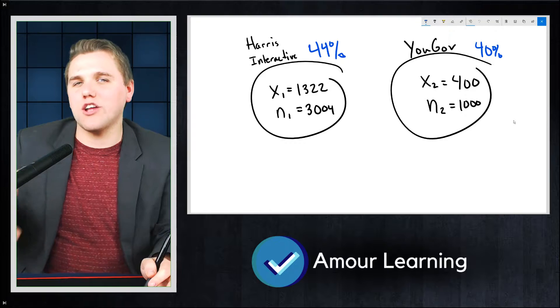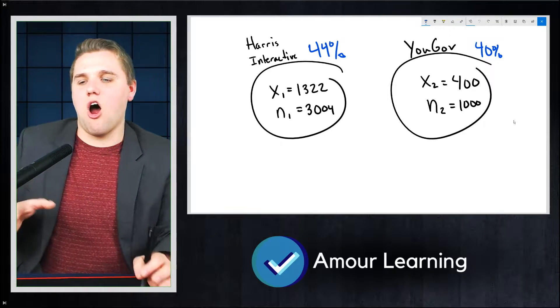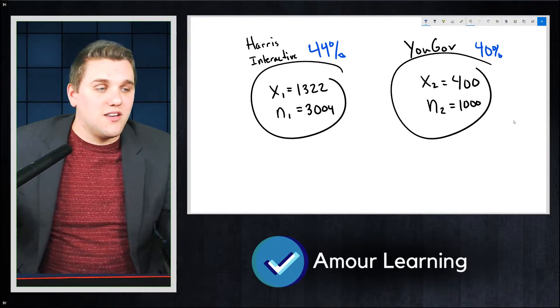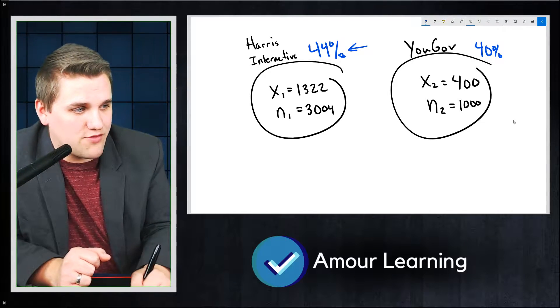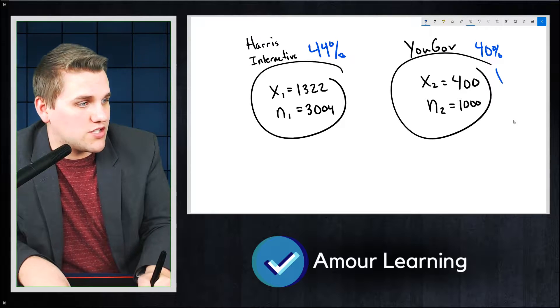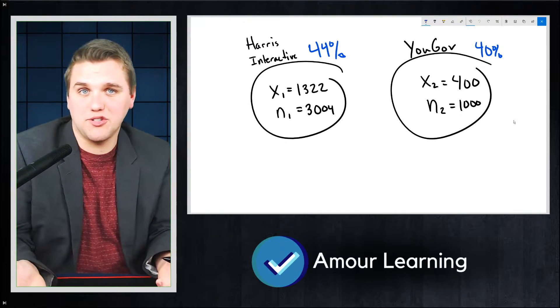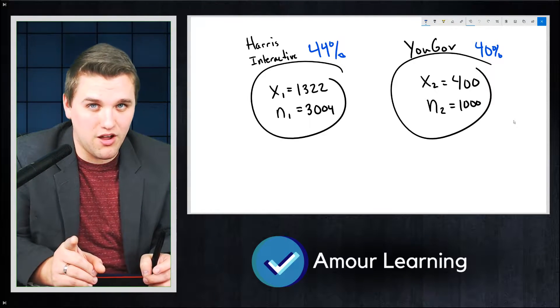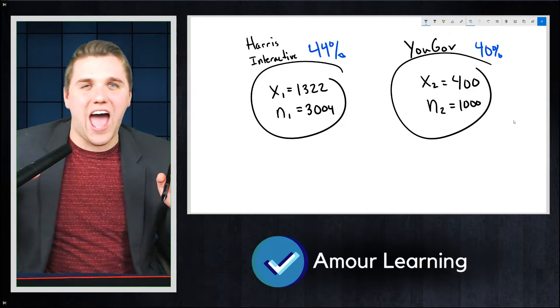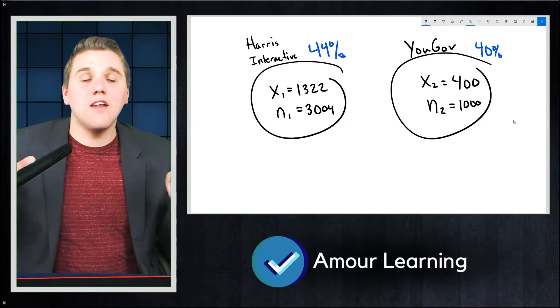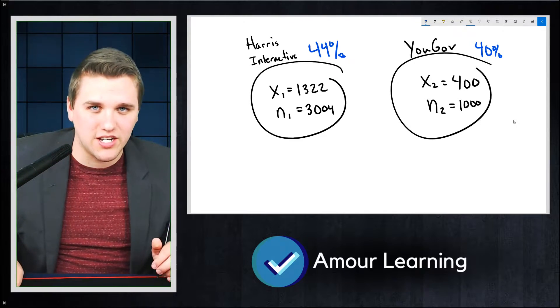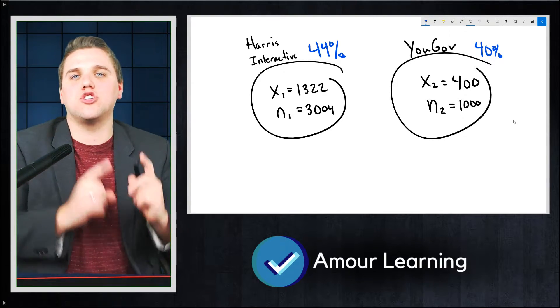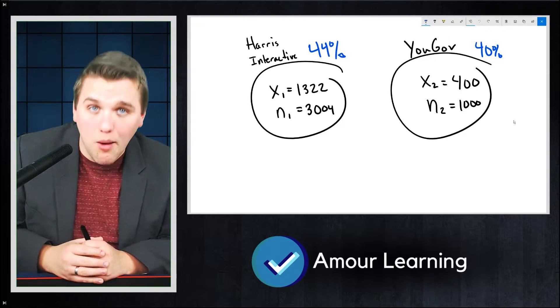The question is, are these two samples different from each other? Now, in one sense, the answer is yes. I mean, look at this. Harris Interactive has 44%, YouGov has 40%. Those are different numbers. But the question is, are those numbers actually really different from each other? Are they so different that there has to be something else outside that is influencing how these polls are conducted so that these two polls are genuinely different from each other? And that's what the two-sample z-test for proportions can help us with.